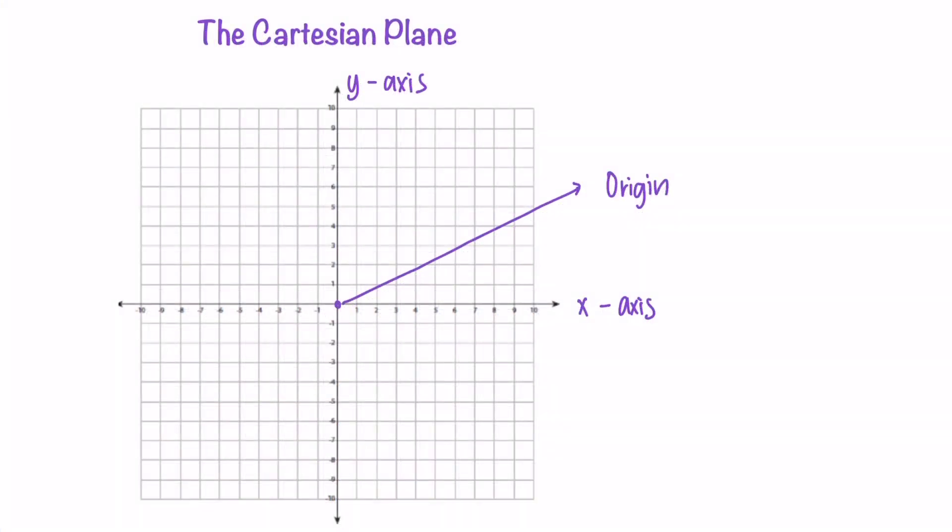The x-axis is an ordinary number line with positive numbers to the right of the origin. You can see the positive numbers starting from 1 up until 10 here, and it can go on, as indicated by the arrowhead. To the left of the origin, we have negative numbers starting with negative 1, going to negative 10, and it can go on.